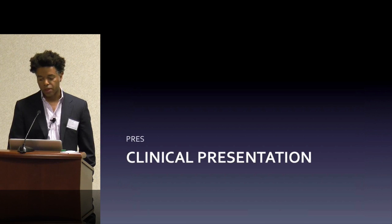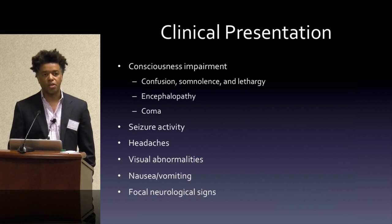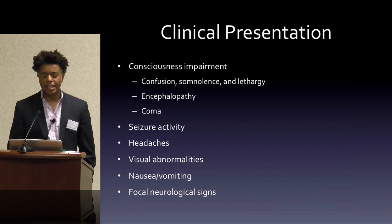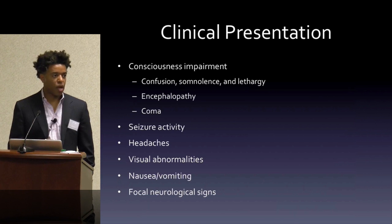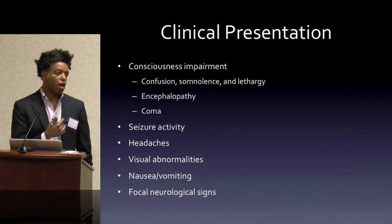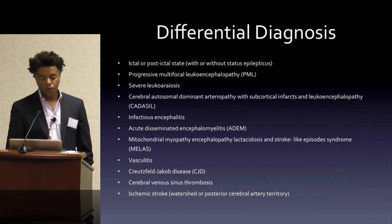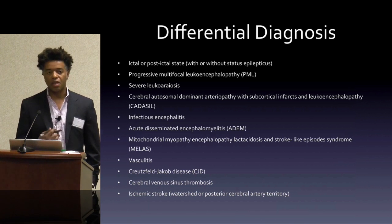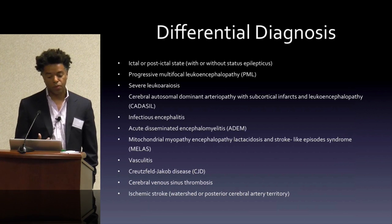The clinical presentation of PRES mirrors our vignette: patients often present with consciousness impairment — confusion or coma. Approximately 80 to 90 percent of patients have some sort of seizure activity. Headaches, visual abnormalities — mostly because of the predominant effects of PRES in the posterior regions — nausea, vomiting, and focal neurological signs that make PRES resemble stroke, such as weakness on one side, numbness and tingling. The differential diagnosis is fairly lengthy because many things can resemble PRES, though it is fairly easily defined on imaging.